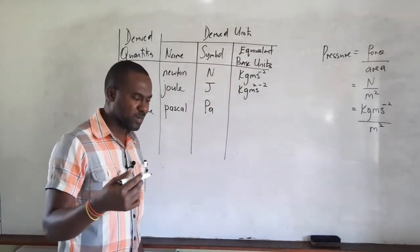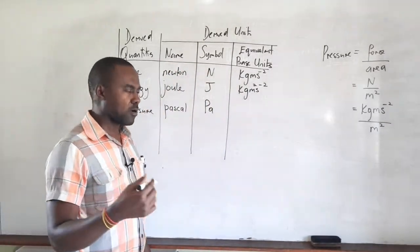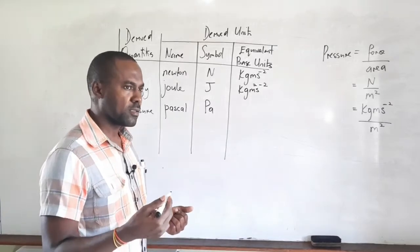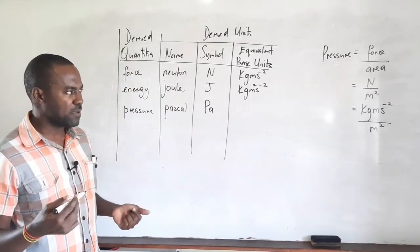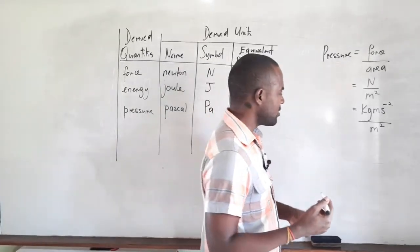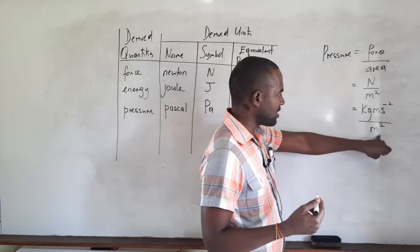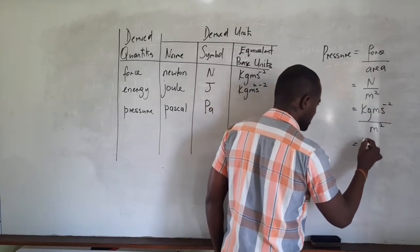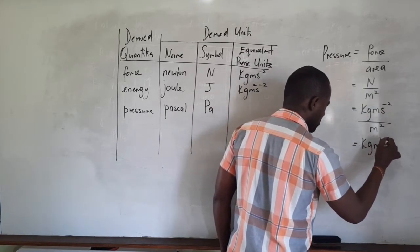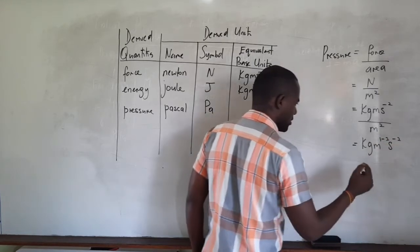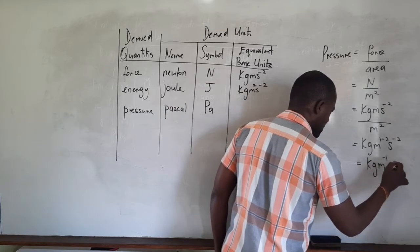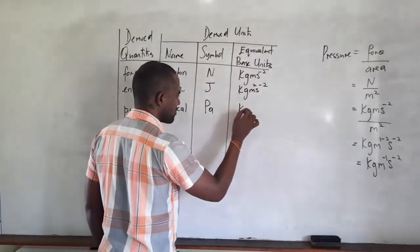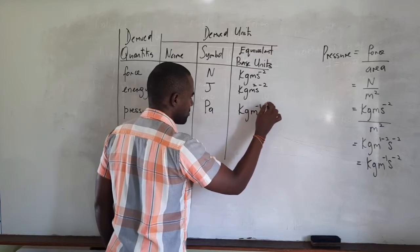This takes us back to the laws of indices. When dividing indices of the same base, we keep the base and subtract the powers. There is m in the numerator and m squared in the denominator, so we subtract: m to the power of 1 minus 2, giving kg·m⁻¹·s⁻². Therefore the pascal is equivalent to kilogram per meter per second squared.